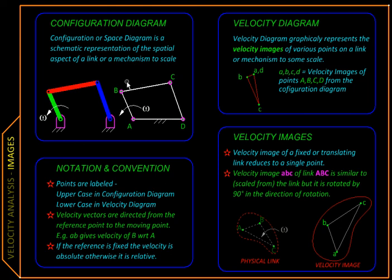For every point in the space diagram, there is a velocity image in the velocity diagram. To distinguish, we will use capital letters in space diagram and lowercase letters in velocity diagram.